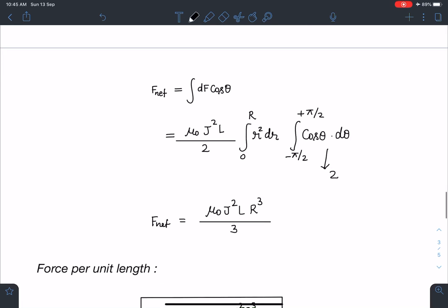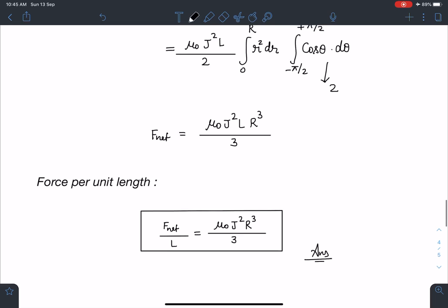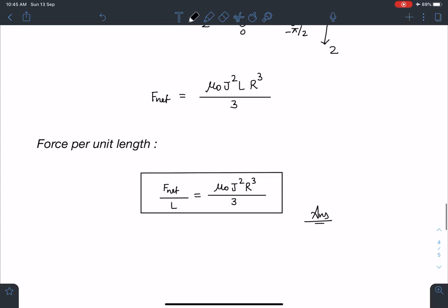You can see here, one r from here, one r from here, and here also I am going to write r². So when I simplify this, this is going to give us r³/3, and from here I will get 2. This 2 and 2 gets cancelled, so I am going to get this F_net as μ₀j²Lr³/3. This is the force on length L of the cylinder. So if I have to, in the question I have to write force per unit length, so this force per unit length I can simply write it as μ₀j²r³/3.